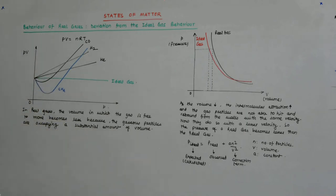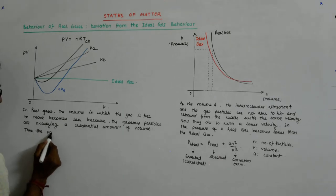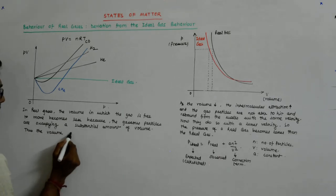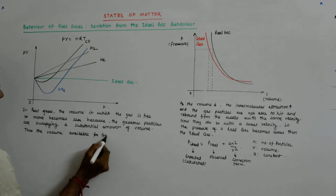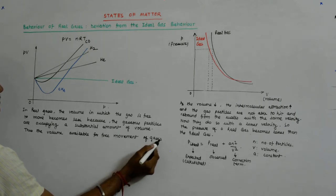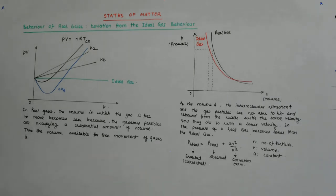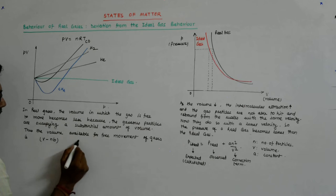So they are occupying a substantial amount of volume. So the volume available for free movement of gases is V minus NB, where N is the number of moles.